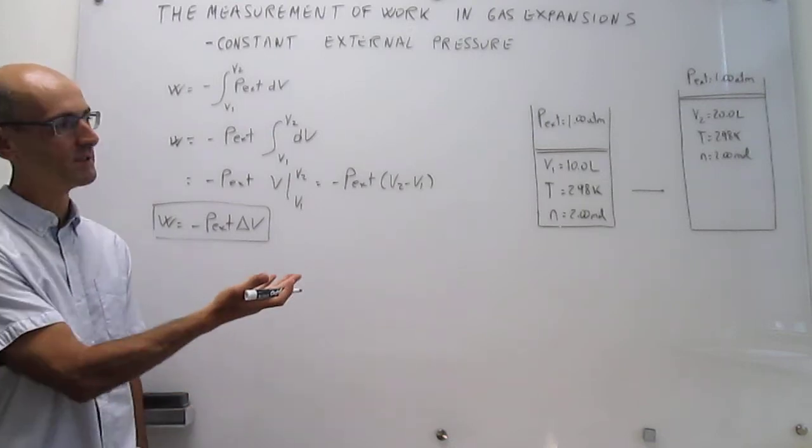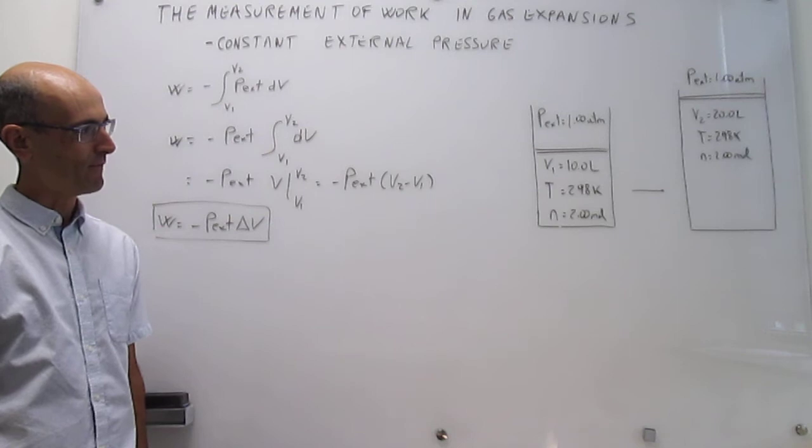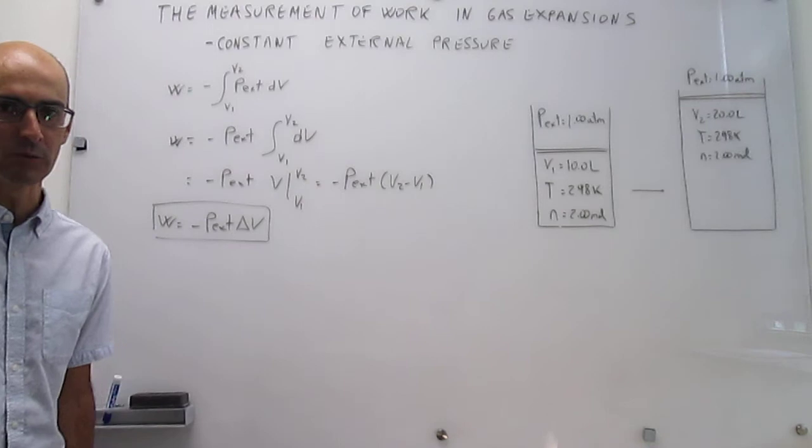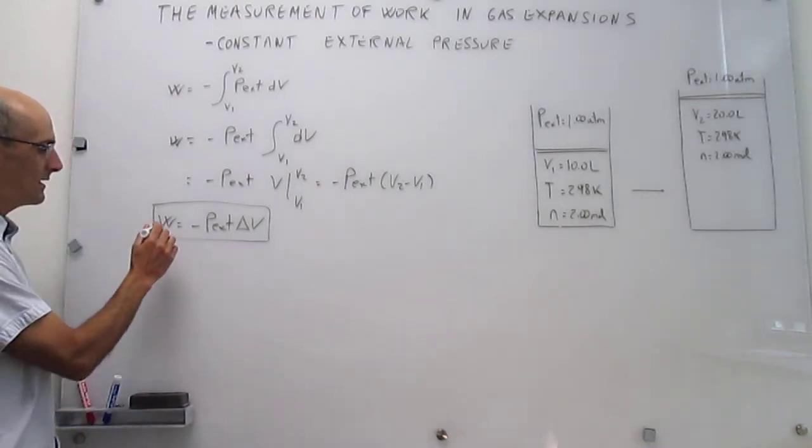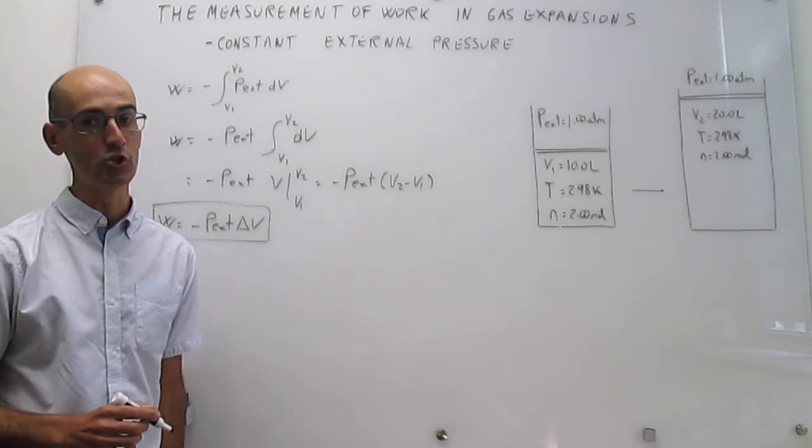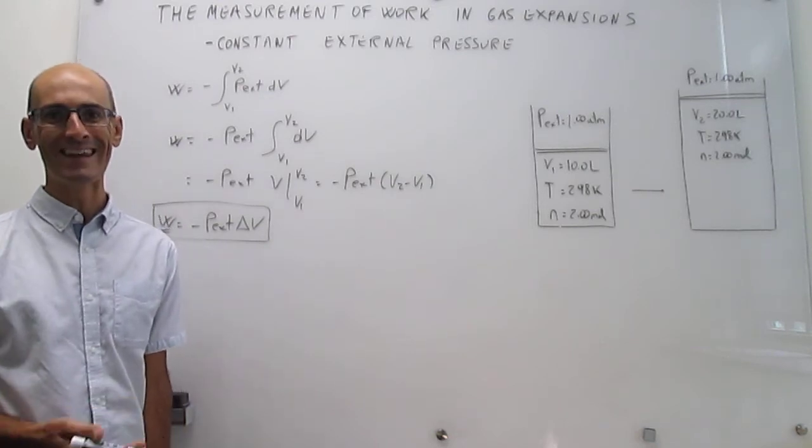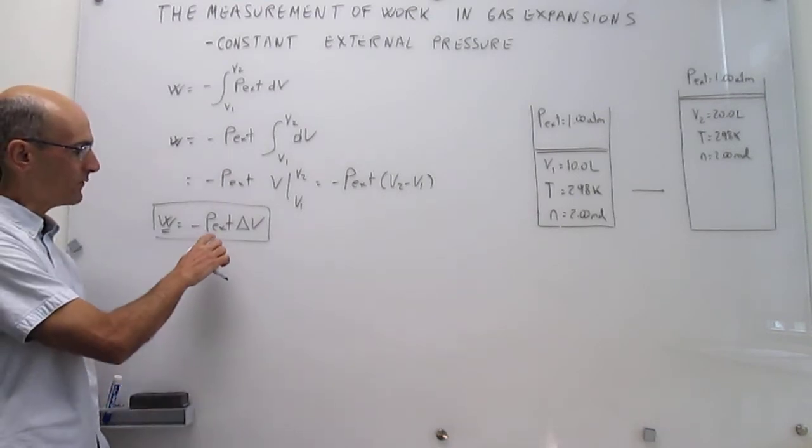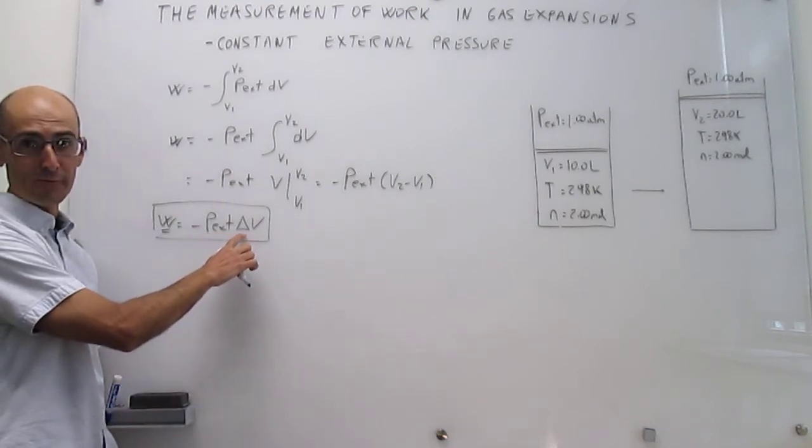We're actually going to punch in the numbers that we have for that expression, just to show you that you have to be a little bit careful with the units in this particular case. Notice that work is usually going to be expressed in joules, and joules is an SI unit. That means you also have to use SI units for the external pressure and for the volume.